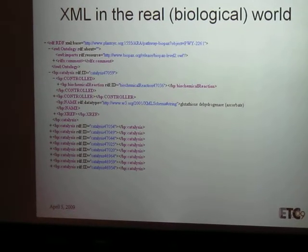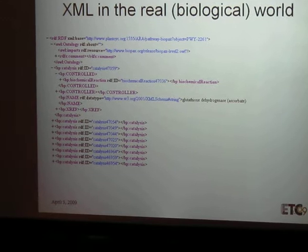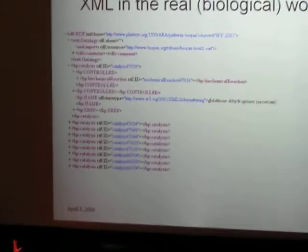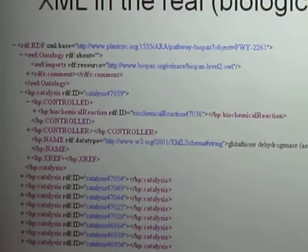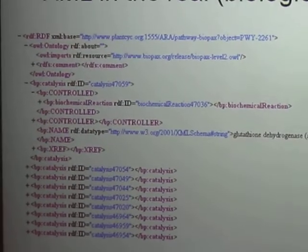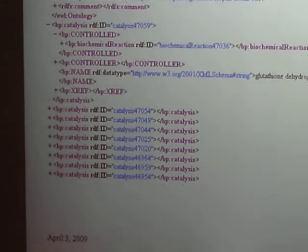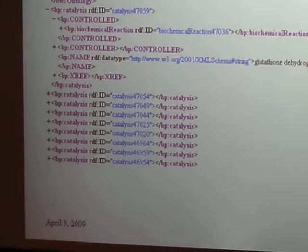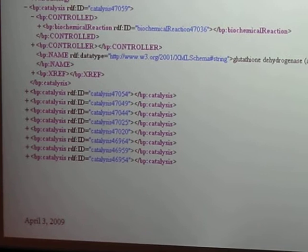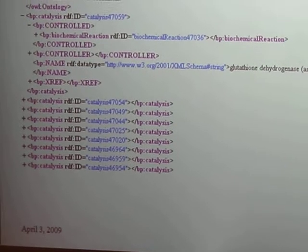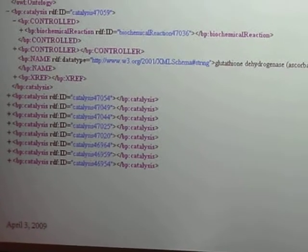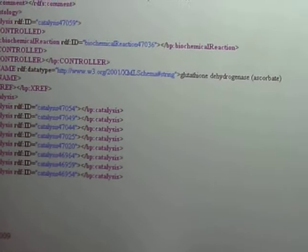XML will run a lot of the work, so this is an example of a file that we would have gotten from the ARISIC website. This is the pathway that I showed earlier, so this is what the file of the pathway looks like when I downloaded it from ARISIC.